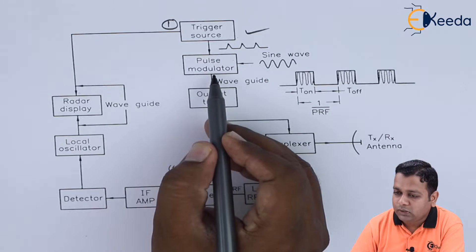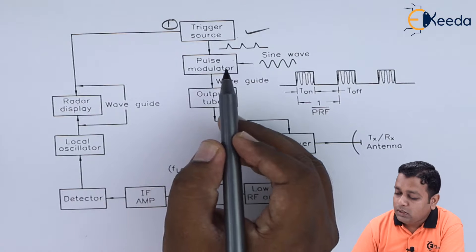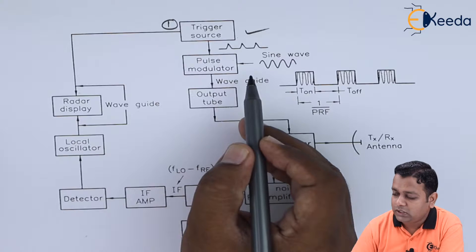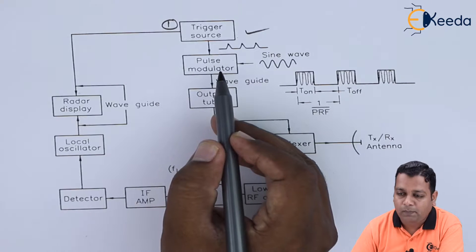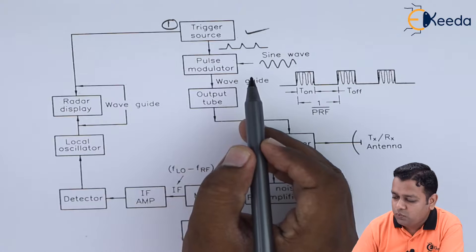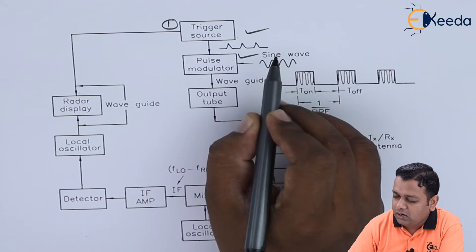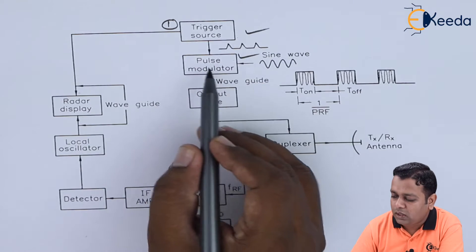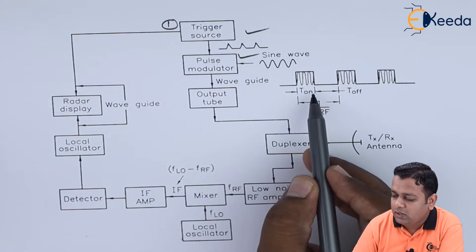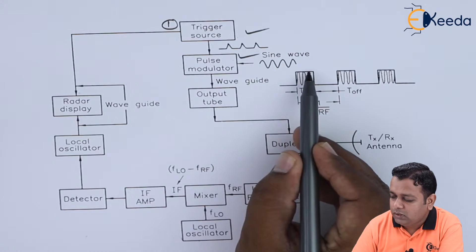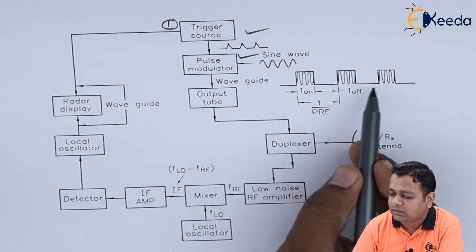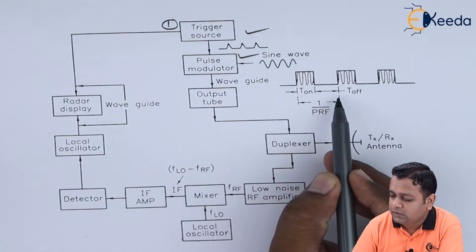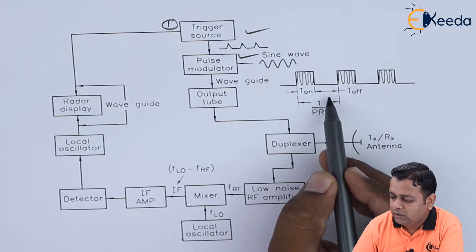Next to that we have the pulse modulator. The pulse modulator provides the rectangular voltage pulses which act as the supply voltage to the output tube. This is the second block which makes possible the sine wave modulated with the help of the pulses. Here we have the representation of the pulses and inside there it is the sine wave.